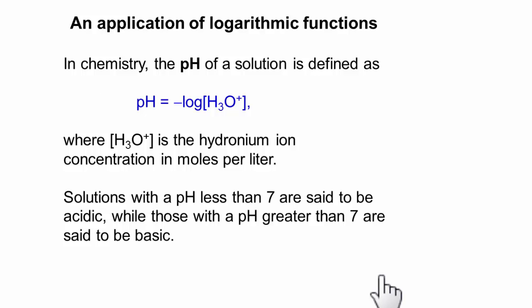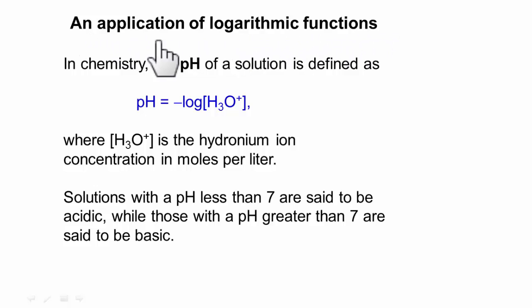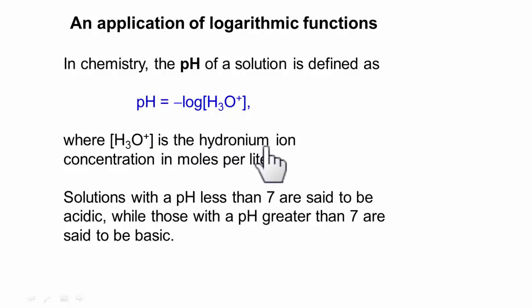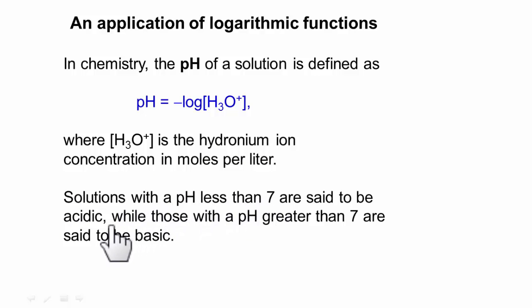An application of logarithmic functions — we're going to look at one word problem. In chemistry, the pH of a solution is defined as the negative of the log of H₃O⁺, where H₃O⁺ is the hydronium ion concentration in moles per liter. Solutions with a pH less than 7 are said to be acidic, while those with a pH greater than 7 are said to be basic.